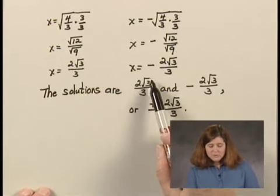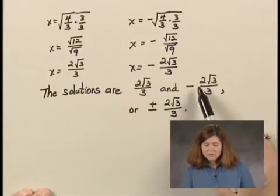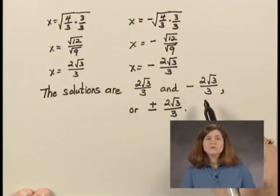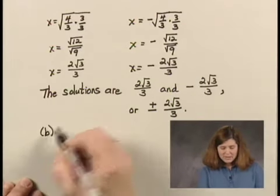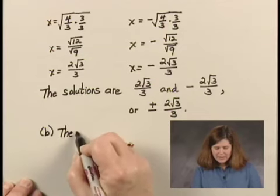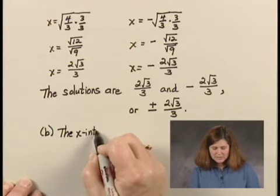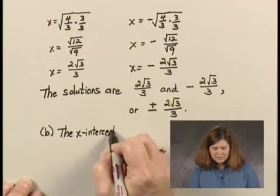These solutions, 2√3/3 and -2√3/3, are the first coordinates of the x-intercepts. So for part b, I can say the x-intercepts are...